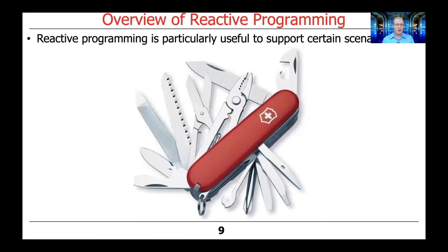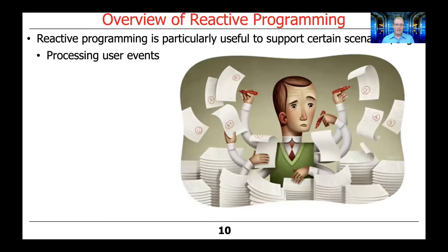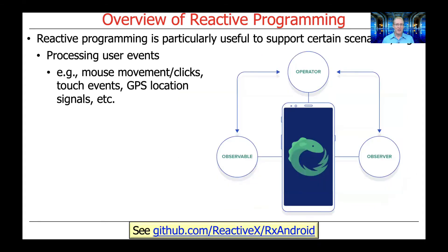Reactive programming can be used for various use cases, and it's ideally suited for processing user events. In modern graphical user interface environments, these user events are typically things like mouse movements, mouse clicks, or touch events on a touch screen like an Android device, GPS location signals, and so on. There's a nice environment called RxAndroid, which is an Android variant of the famous RxJava reactive streams environment, and it's especially oriented to handle various kinds of user events in the Android platform.